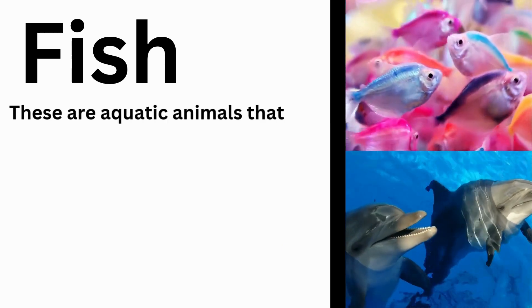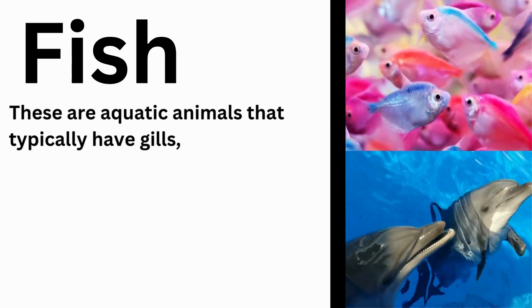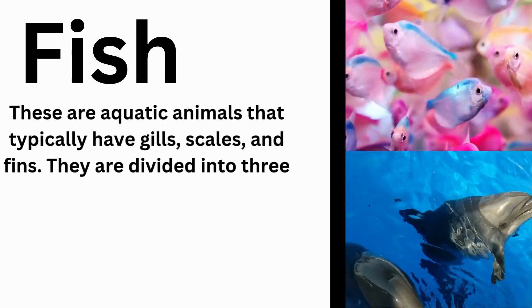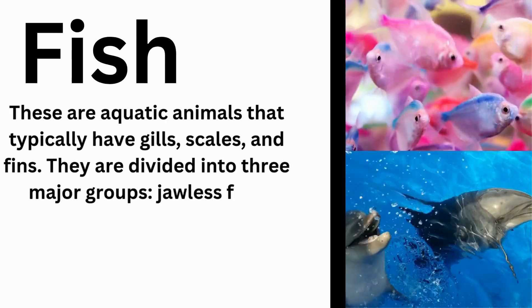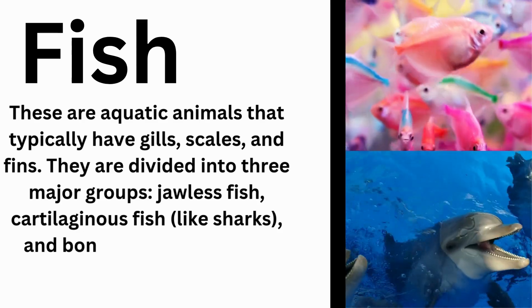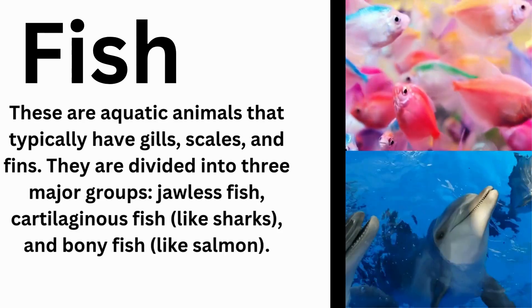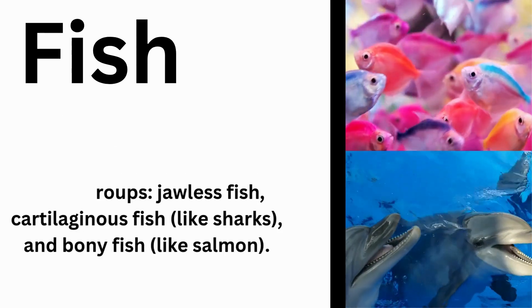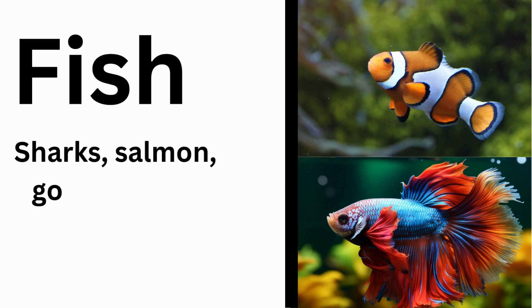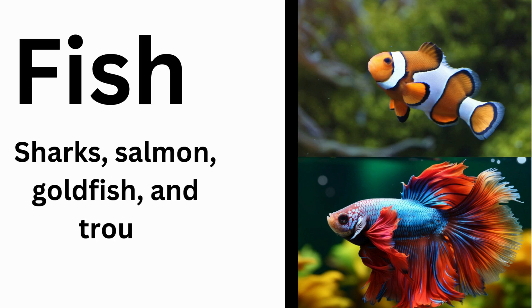Fish are aquatic animals that typically have gills, scales, and fins. They are divided into three major groups: jawless fish, cartilaginous fish such as sharks, and bony fish such as salmon, goldfish, and trout.